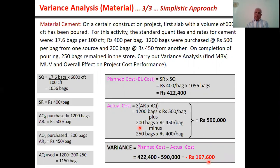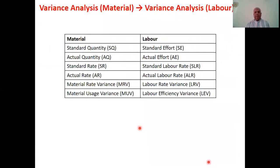Now let's transition from material to labor. Here is a comparison of terminology: standard quantity becomes standard effort; actual quantity becomes actual effort; standard rate remains standard rate; material rate variance becomes labor rate variance; and material usage variance becomes labor efficiency variance.